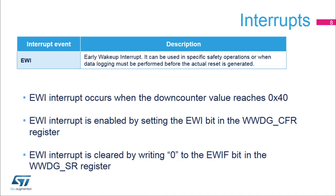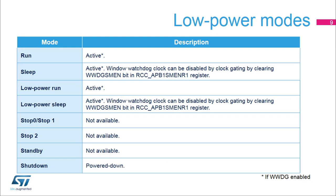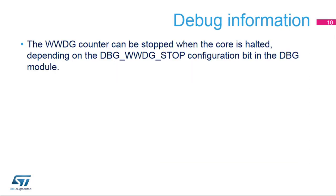The EWI interrupt is cleared by writing 0 to the EWIF bit in the WWDG SR register. The window watchdog is active in run, sleep, low power run, and low power sleep modes. It is not available in stop or standby modes and is powered down in shutdown mode. In sleep and low power sleep modes, the window watchdog clock can be disabled by clock gating by clearing the WWDGSMEN bit in the RCC APB1 MENR1 register. When the microcontroller enters debug mode with the core halted, the window watchdog counter either continues to work normally or stops, depending on the DBG WWDG stop configuration bit in the DBG module.